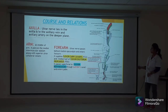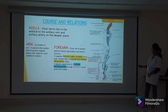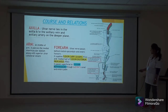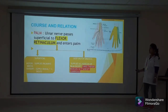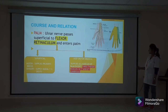The ulnar nerve lies in the axilla between the axillary vein and axillary artery. At the middle of the arm, it pierces the medial intermuscular septum along with the superior ulnar collateral vessels. The ulnar nerve passes behind the medial epicondyle and enters the forearm, supplying the two heads of flexor carpi ulnaris and the medial half of flexor digitorum profundus. It passes superficial to the flexor retinaculum and enters the palm, dividing into a superficial branch — supplying the palmaris brevis and medial one and a half digits — and a deep branch supplying all muscles except the three thenar muscles.